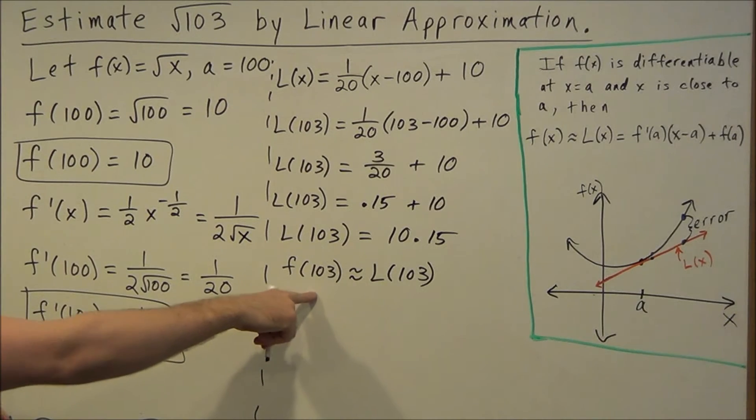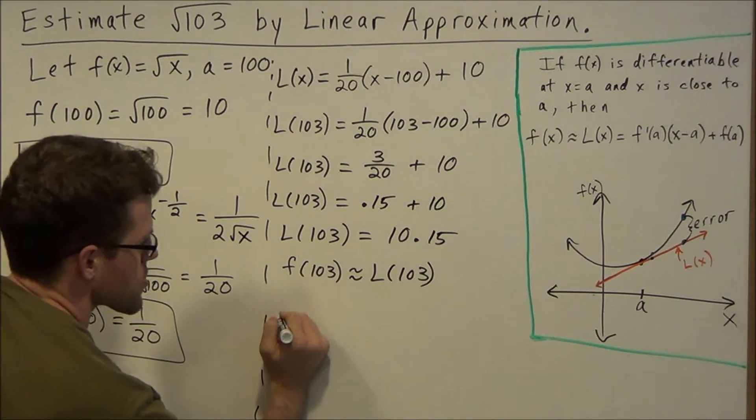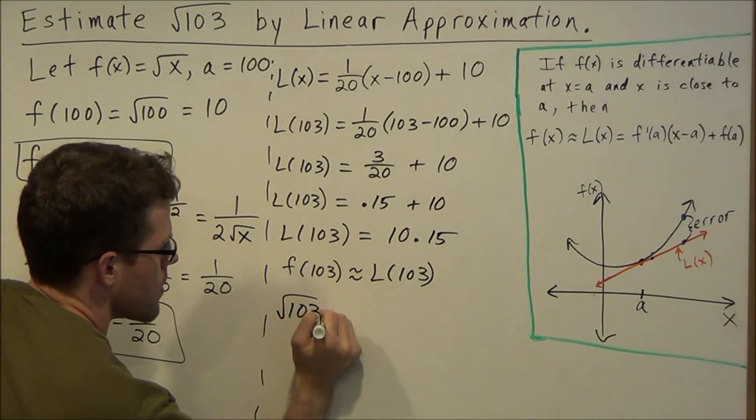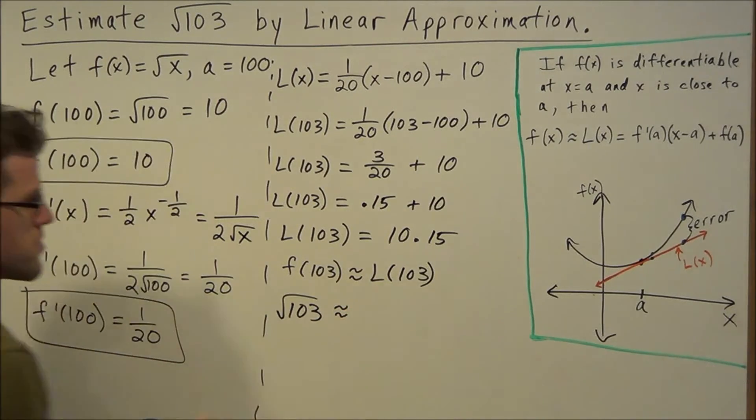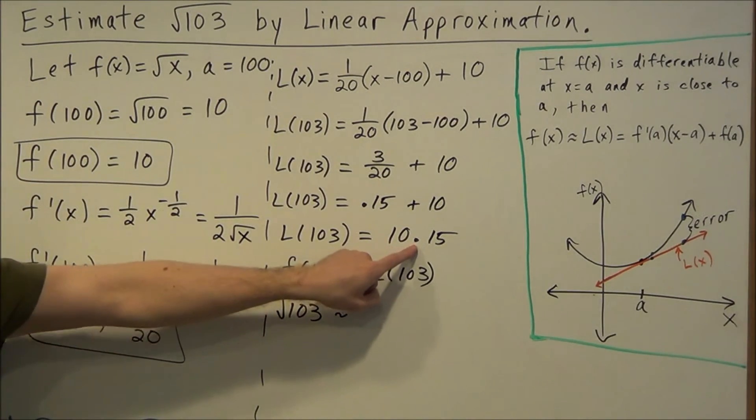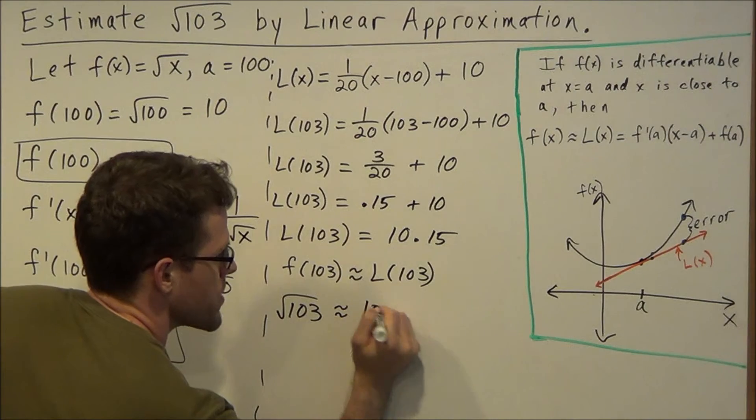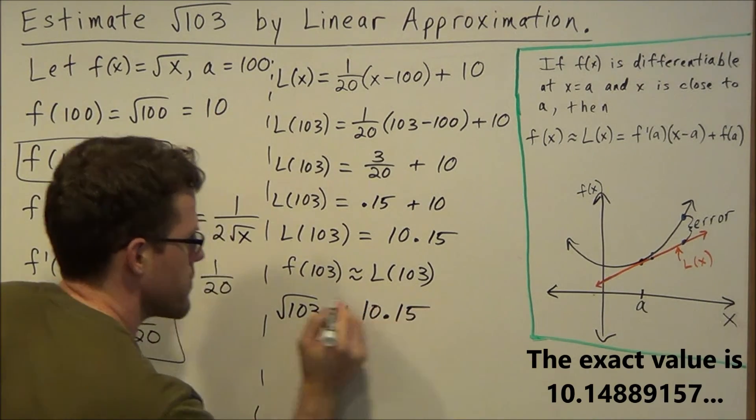And if we look here, f(103) is equal to the square root of 103, and this is approximately equal to the value we just found on the previous line here, 10.15.